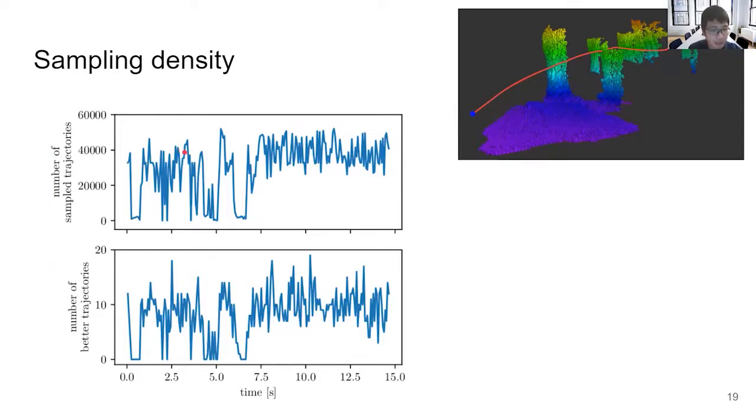Because of the computational efficiency of the algorithm, the planner can sample a large number of trajectories during the flight as shown in the first row. This allows us to sample each depth image densely. The sampled trajectories are then checked for input feasibility, speed limit, and collision. The number of trajectories better than the current trajectory is shown in the bottom row.